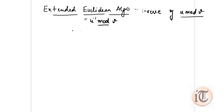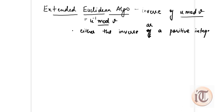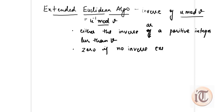The most important part is that the algorithm returns either the inverse as a positive integer which is less than v, or it returns 0, which means no inverse exists. So these are the two conditions: if it returns a positive integer less than v, then u inverse mod v has an inverse value; if it returns 0, then no inverse exists.